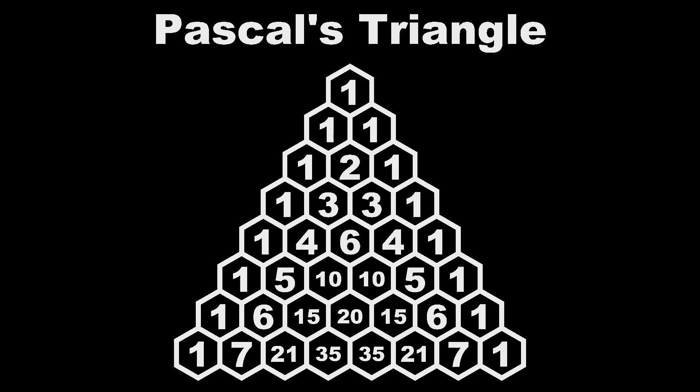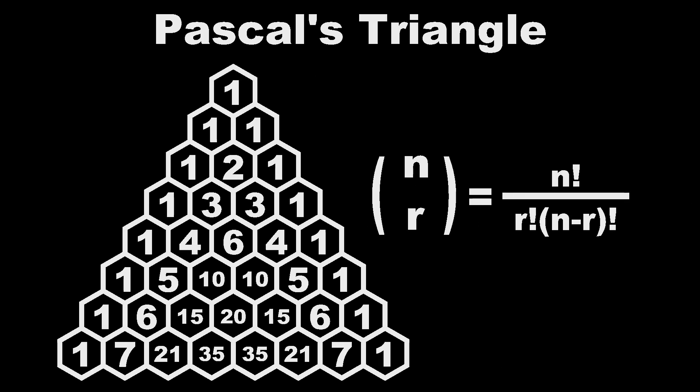But Pascal's Triangle can actually be defined in a different way, in terms of a combinatorics formula called n choose r, often written like this. All n choose r does is calculates the number of ways you can grab r items from a pool of n items where order doesn't matter. Since it's kind of outside the scope of this video, I'll just show you the formula. It's not really important to understand how this works right now, just know that it does.